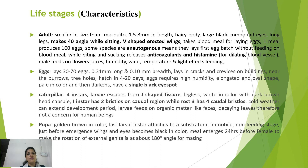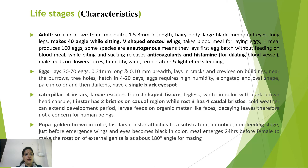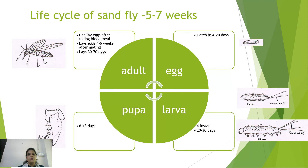The adult sand fly is smaller than a mosquito, hairy-bodied with large black compound eyes, rests at a 40-degree angle, and holds its wings in a V-shape. Some species are autogenous — laying the first egg batch without a blood meal. They have biting and sucking mouthparts, release anticoagulants and histamines, and lay 30–70 small eggs in cracks, crevices, burrows, or tree holes, hatching in 4–20 days. Larvae have four instars; the first instar has two caudal bristles while later instars have four caudal bristles — an identification character.